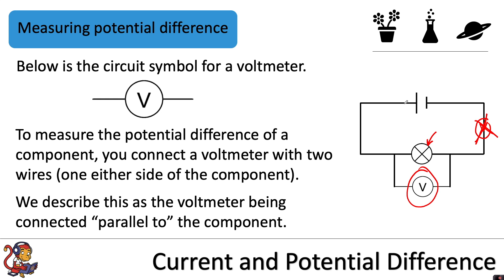If I wanted to measure the potential difference of this cell for example, I would put a wire either side of the cell connected to my voltmeter.